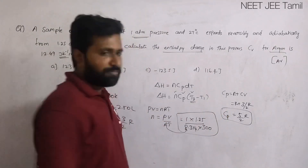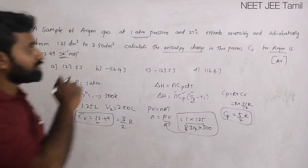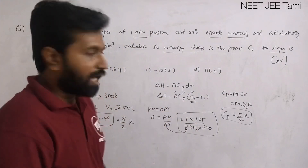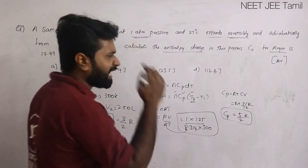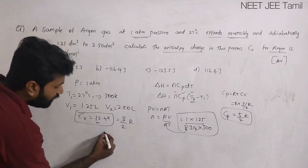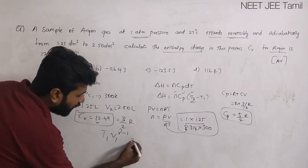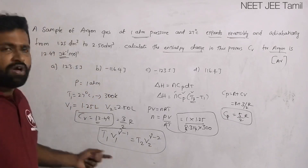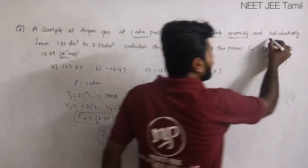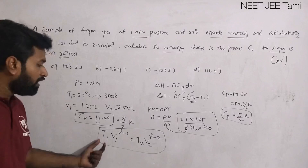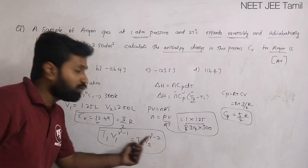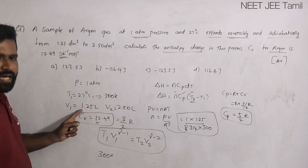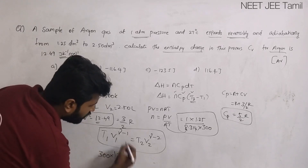The next unknown is T2. Since the process is reversible and adiabatic, we use the expression T1 V1^(γ-1) equals T2 V2^(γ-1). Here T1 is the initial temperature 300 Kelvin, V1 is the initial volume 1.25 L, and gamma equals Cp/Cv equals (5/2 R)/(3/2 R) equals 5/3. So gamma minus 1 equals 2/3.